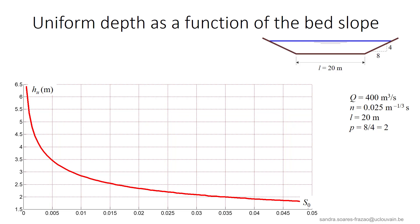However, other types of flow — non-uniform — exist on horizontal beds, as we will see later.